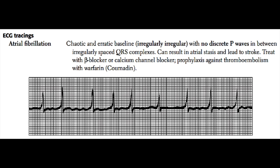Next, we'll discuss some commonly tested EKG tracings seen on Step 1. The first one you should be familiar with is atrial fibrillation. As you can see from this EKG strip, you have QRS complexes spaced across the page that are irregularly irregular, meaning there are different RR intervals each time, and there's no pattern to these RR intervals.